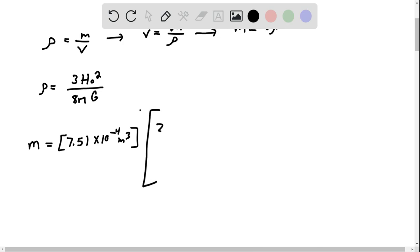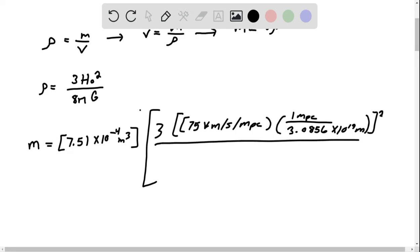Now we have 3, and we're going to multiply this by 75 kilometers per second per megaparsec. We have 1 megaparsec divided by 3.0856 times 10 to the 19 meters, squared, divided by 8 pi. And G is 6.67 times 10 to the negative 11 newtons meters squared per kilogram squared.